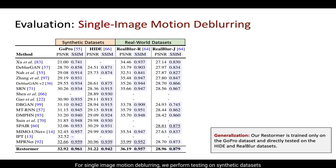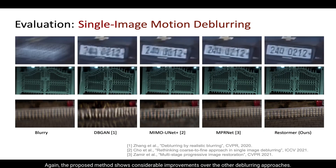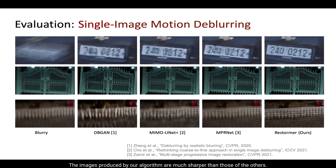For single image motion de-blurring, we perform testing on synthetic datasets as well as on real-world datasets. Again, the proposed method shows considerable improvements over other de-blurring approaches. Here we present visual results — the images produced by our algorithm are sharper than those of the others.